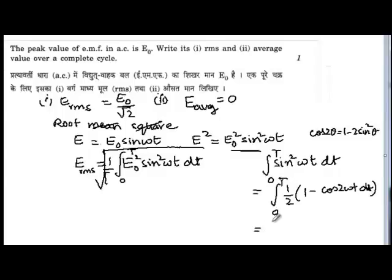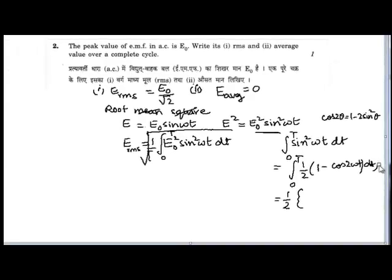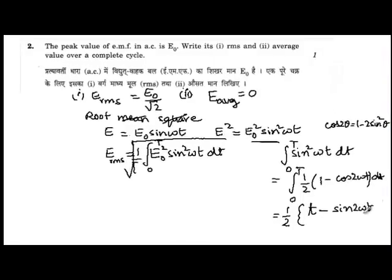Now you can take the half outside. So integral, just put a bracket over here. Now integral of 1 dt would be t. Then substituting the limits, so we have t minus integration of cos 2ωt will be sin 2ωt by 2ω. And then we substitute the limits from 0 to T.